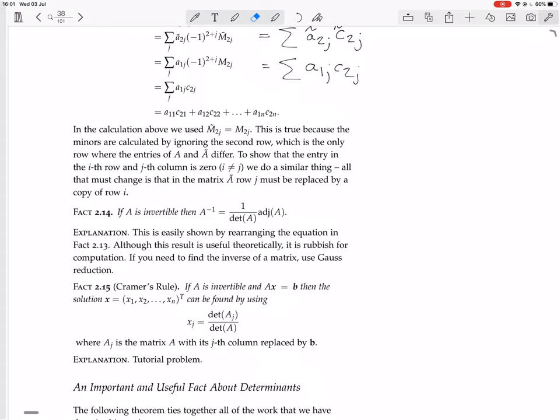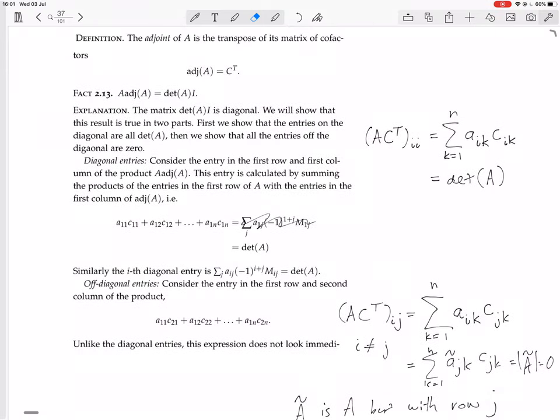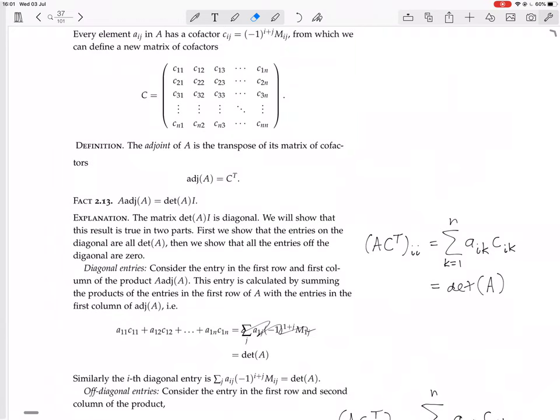You take this equation, divide throughout by the determinant of A, and you'll get A times 1 over the determinant of A times the adjoint of A. It's just a scalar, so it can come in any place, equals I. But this is really the definition of the inverse matrix, right? A times the inverse matrix equals I.